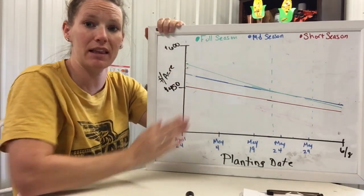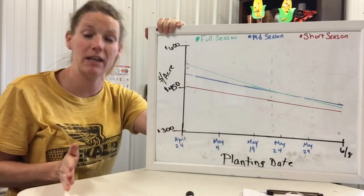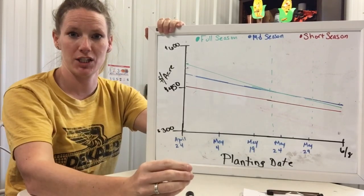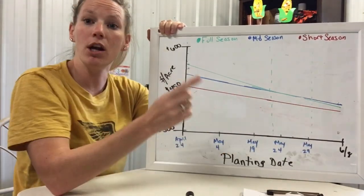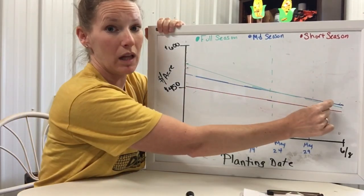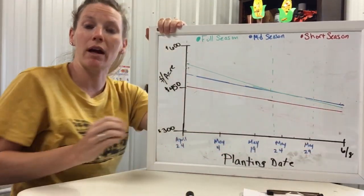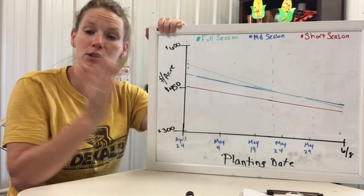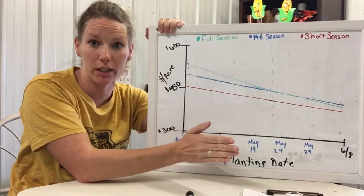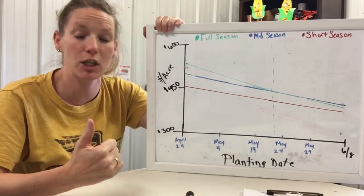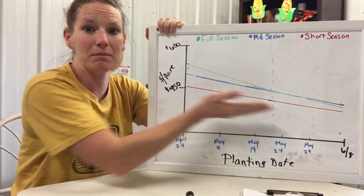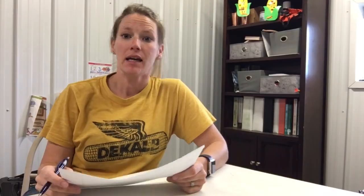The other thing to look at here is: if I have to adjust my maturities, how far should I adjust? I want to point out that at no point do you see either of these two lines below the red. So if we are looking at shifting maturities, let's only shift a couple of days. Don't completely upset the apple cart and go 10 days earlier — because those hybrids are probably not going to be adapted to your geography, and the return simply is not going to be there.